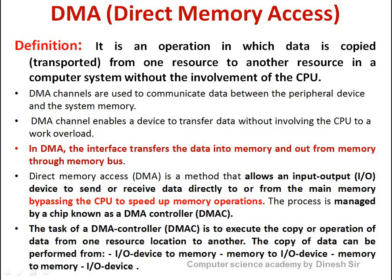Inside DMA, there is a Direct Memory Controller — DMAC — which is a chip that governs all this work. DMA has its own subordinate. The Direct Memory Access Controller is a chip through which all operations — copying data, pasting data, transferring data from one place to another — are performed and governed. This scenario is known as Direct Memory Access: accessing memory directly without involving the CPU.